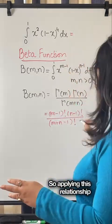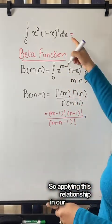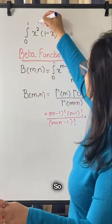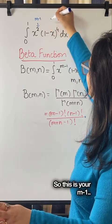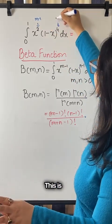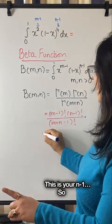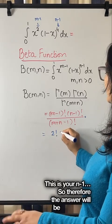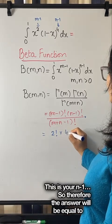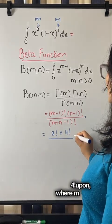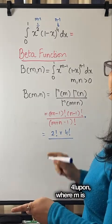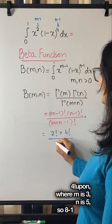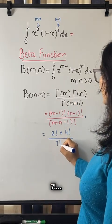Applying this relationship to our question, we can directly get our answer. This is your (m minus 1) and this is your (n minus 1). So the answer will be equal to 2 factorial multiplied by 4 factorial, upon — where m is 3 and n is 5, so (m plus n) is 8, meaning 8 minus 1 — that is 7 factorial.